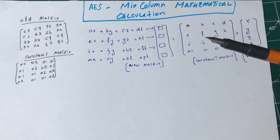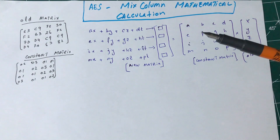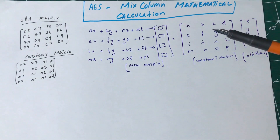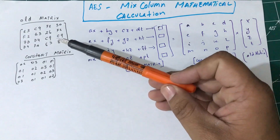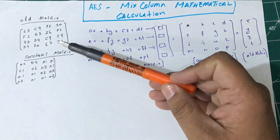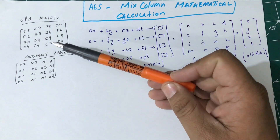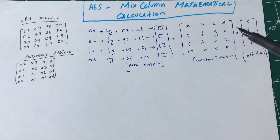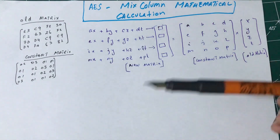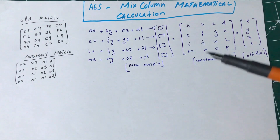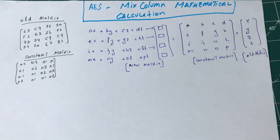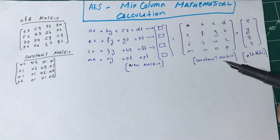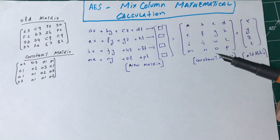On the internet you will find tables you can use to transform your MixColumns values, but we're going to look at the mathematical approach. I'm going to take an example using an old matrix — consider this as coming from the ShiftRows transformation — and use this method to come up with a new transformed value using MixColumns, then verify it's correct.